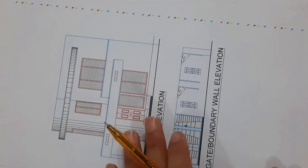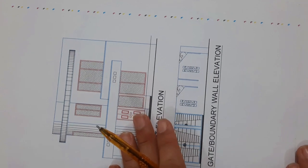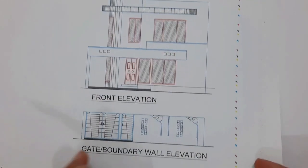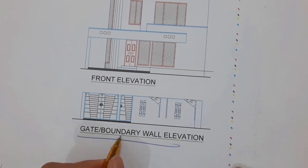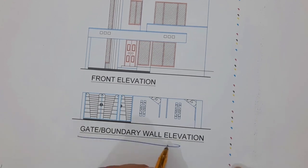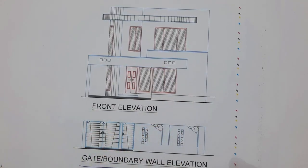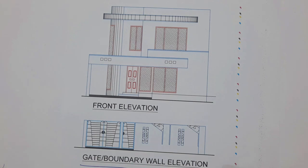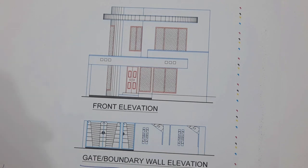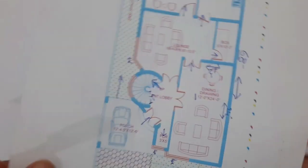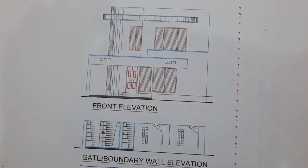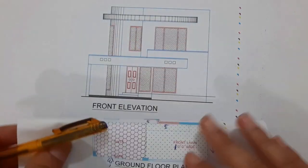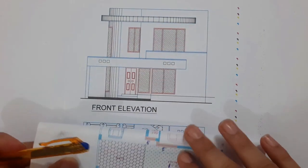Now you can see this is the elevation. The first one is the gate and boundary wall elevation, and the second one is the front elevation. With the help of the planning I will show you the front elevation. First I need the ground floor to show you the ground floor elevation.